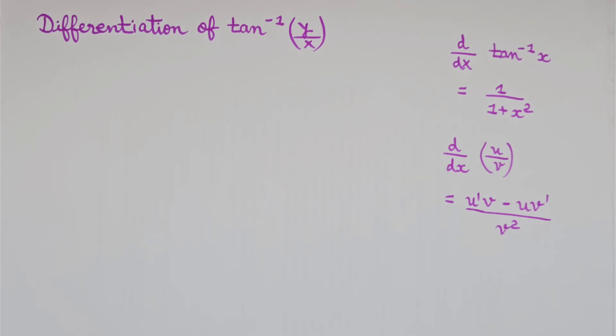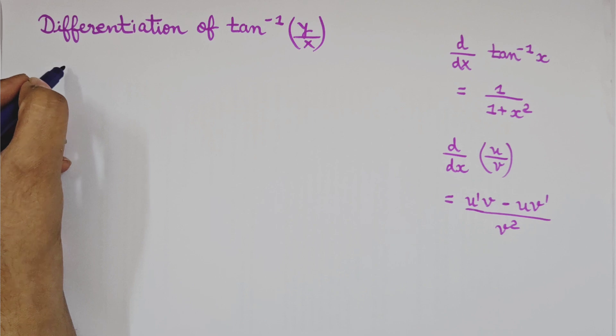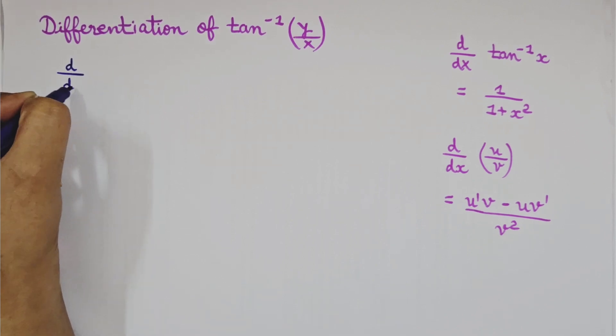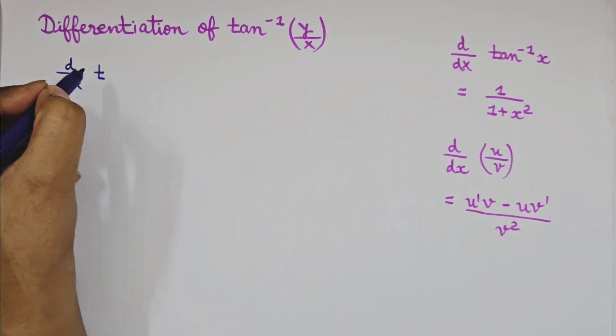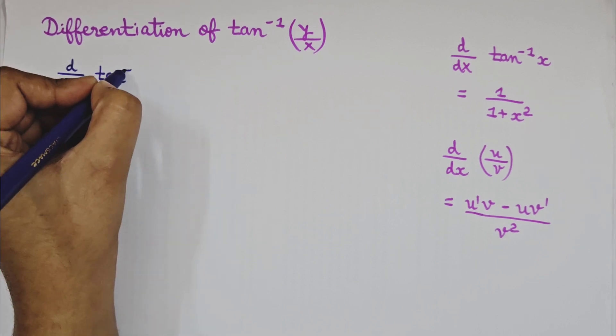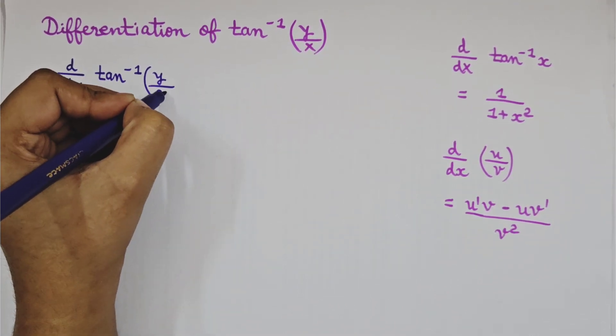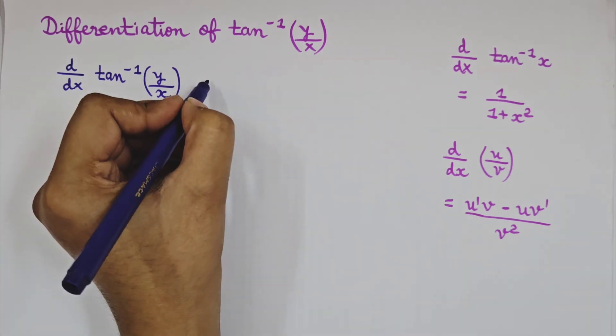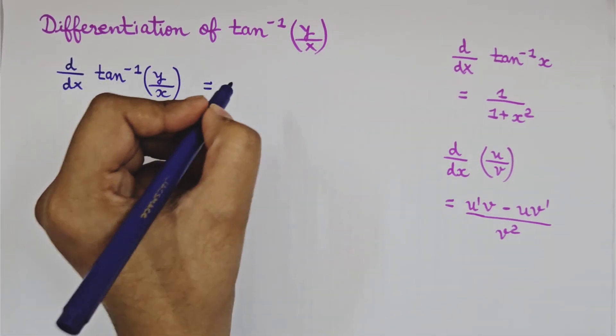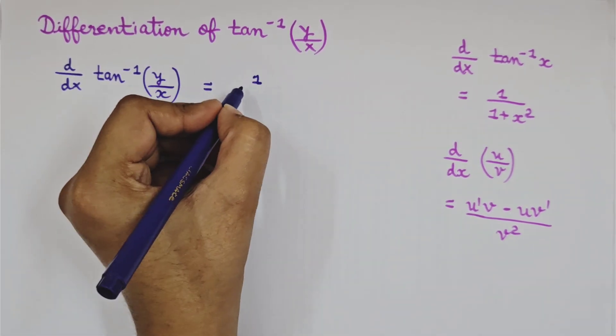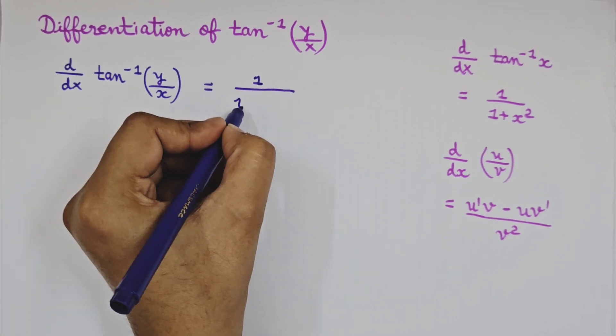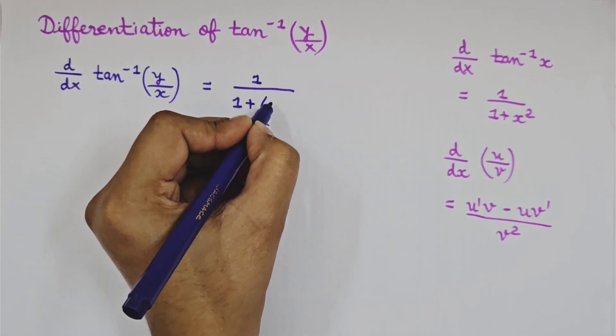So here we need to find d by dx of tan inverse y by x. Tan inverse x is equal to 1 upon 1 plus x square. All you need to do is we'll write y by x in place of x. 1 upon 1 plus x square. We write it like that for tan inverse x.